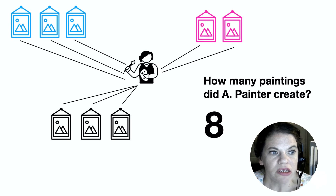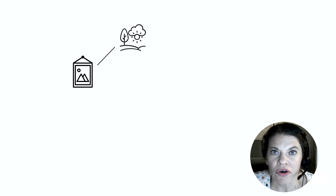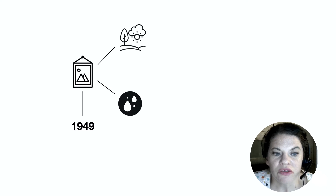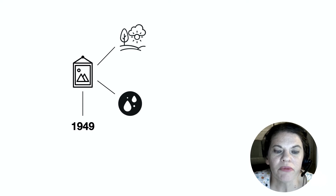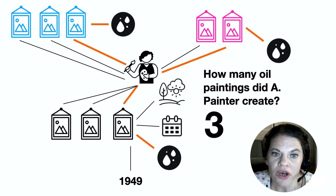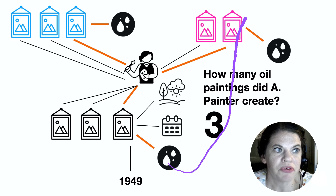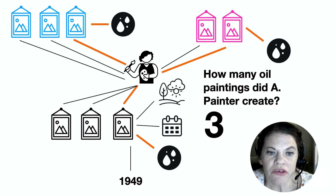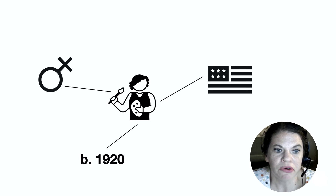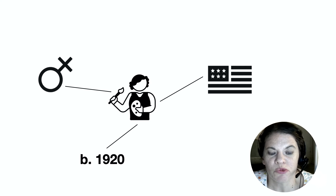Now let's zoom in on an individual painting. Just like the artist has metadata about her, the painting has metadata about it too. For example, it's a landscape, it's an oil painting, and it was painted in 1949. Every painting in our database is going to have information like that attached to it. Because we know these things not only about our artists but about our paintings, we can pose even more complex queries to the database. Ask the database a question and it traverses our graph — first finding the artist we're talking about, then all the paintings, then only those paintings painted in oil: one, two, three.